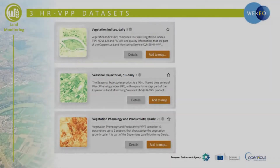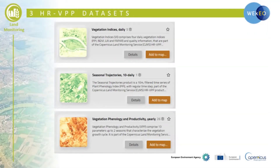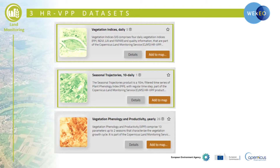Our new HRVPP product offers you three different data sets or product groups: Daily Vegetation Indices or VI, Seasonal Trajectories or ST, and Vegetation Phenology and Productivity Parameters or VPP for two growing seasons. I will show you where to find and how to use them.